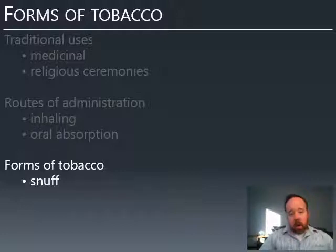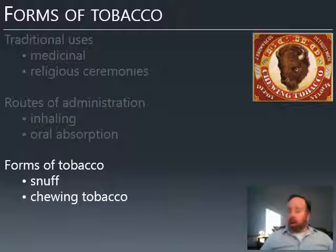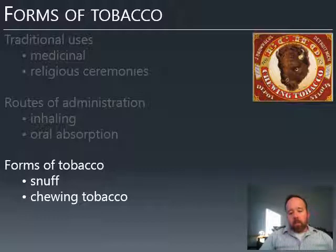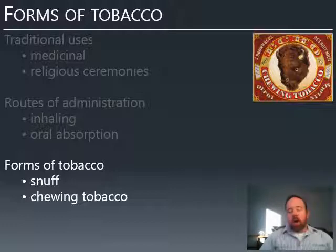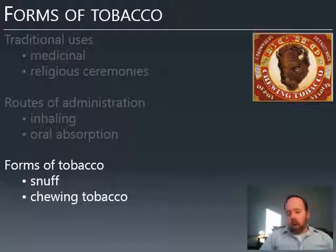There's also chewing tobacco, which exists today and is actually fairly popular, though it used to be more so. For centuries, chewing tobacco was more popular than smoking, if not the most popular form of tobacco use. It's usually taken as a small ball of tobacco tucked between the cheek and the gum. The gums have blood vessels very close to the surface, so it's very easy for nicotine and other ingredients to make their way across the gums and into the bloodstream.